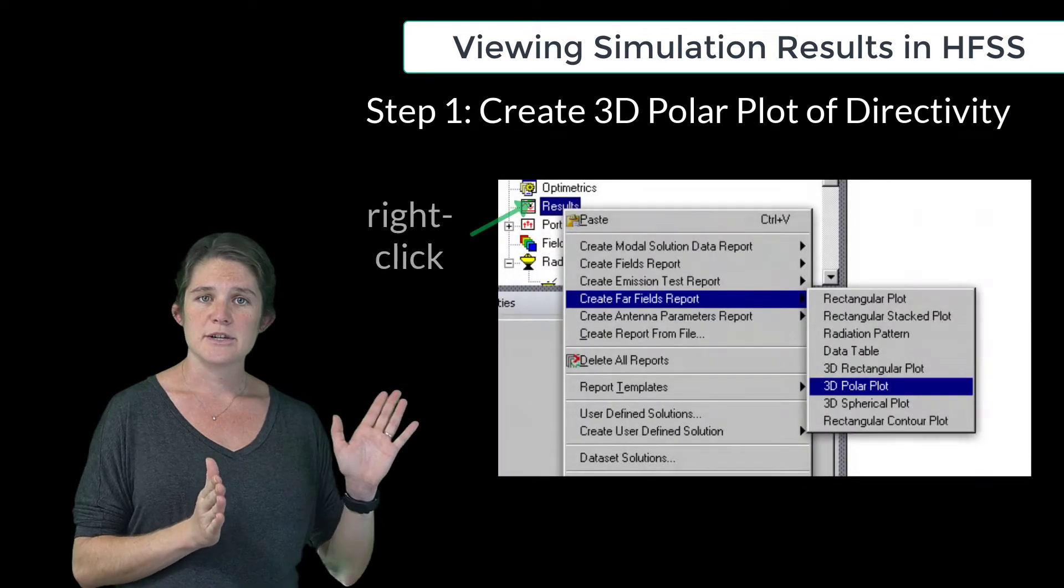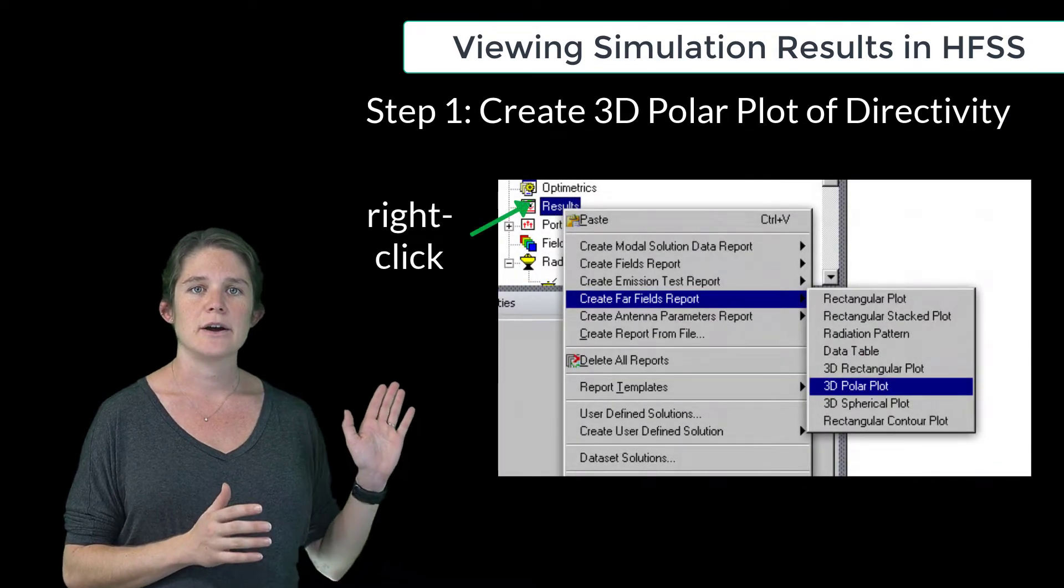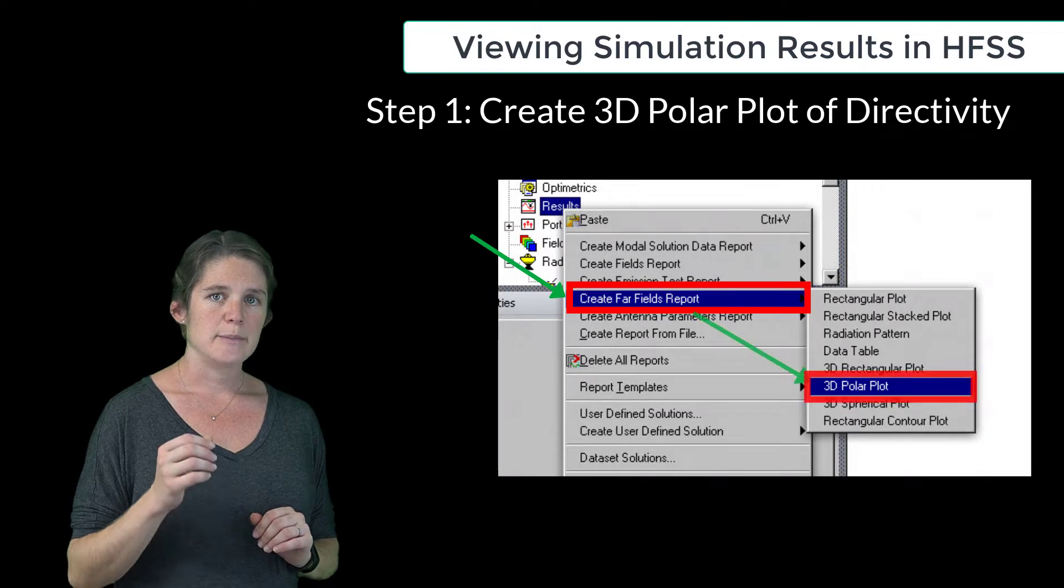To begin, go to the Project Manager window on the left, and right-click on Results. Select Create 3D Polar Plot.